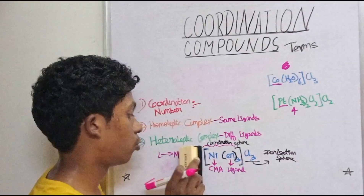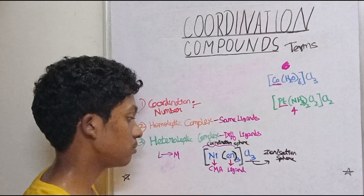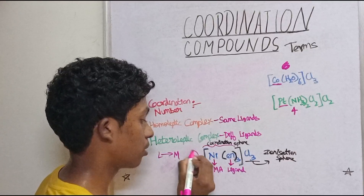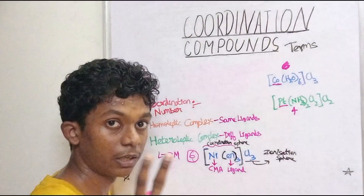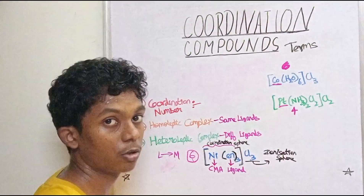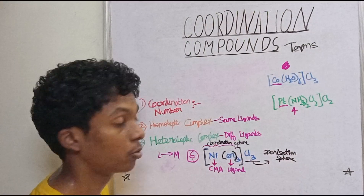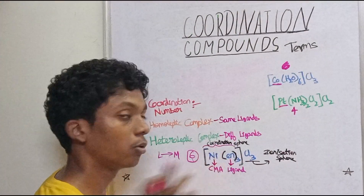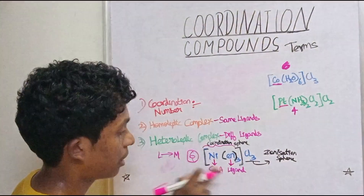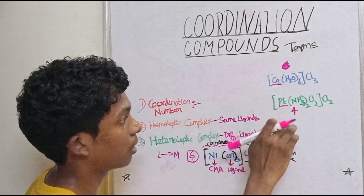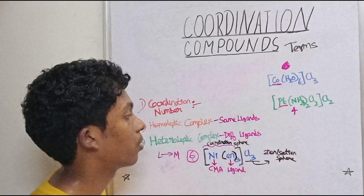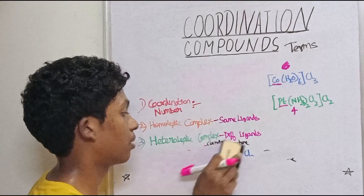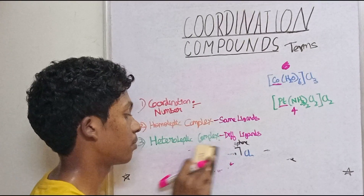If EN is 3 and each EN donates 2 electrons, then the coordination number becomes 6. So coordination numbers of 3, 4, 5, and 6 are common values we will work with.